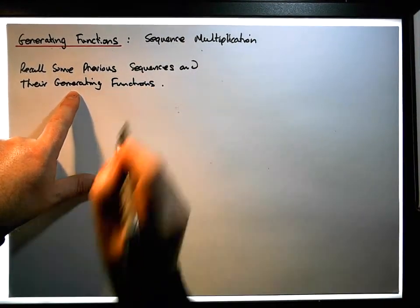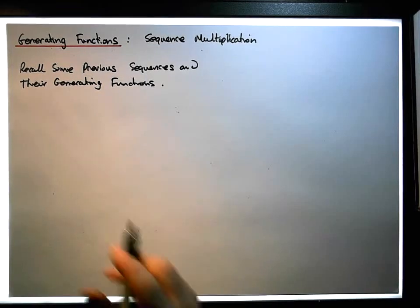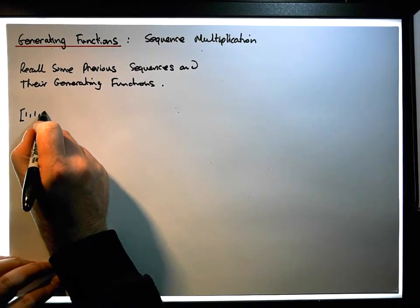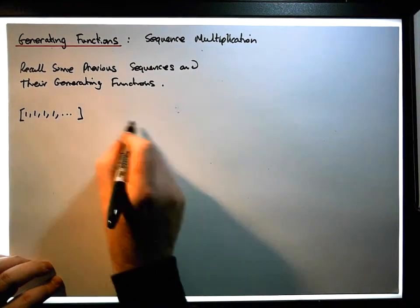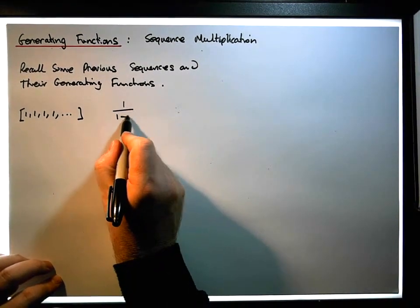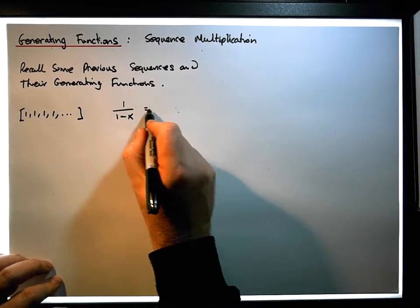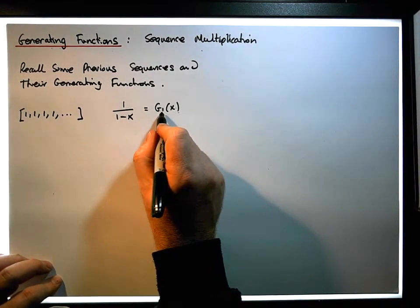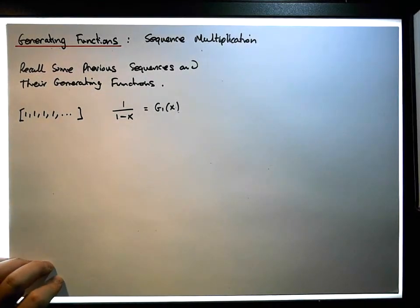So in one of our earlier videos, which is our base sequence, we know that the constant sequence 1, 1, 1, 1, ... has an associated generating function that is simply 1 over (1 minus x). We typically call that g₁(x), with the 1 representing the constant term.